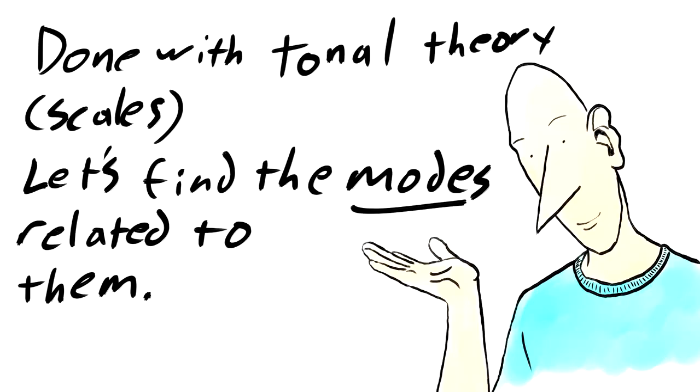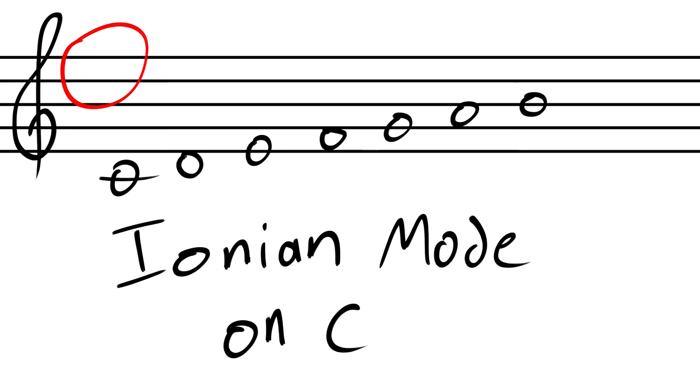Now that we have the tonal theory of these keys down for these particular keys, let's find out the modes that are related to them and how to find them in every other key. The first mode is the easiest to find. We just take a look at the key signature and in this case notice that the song could be in C major. Okay, so that's the first mode, Ionian.